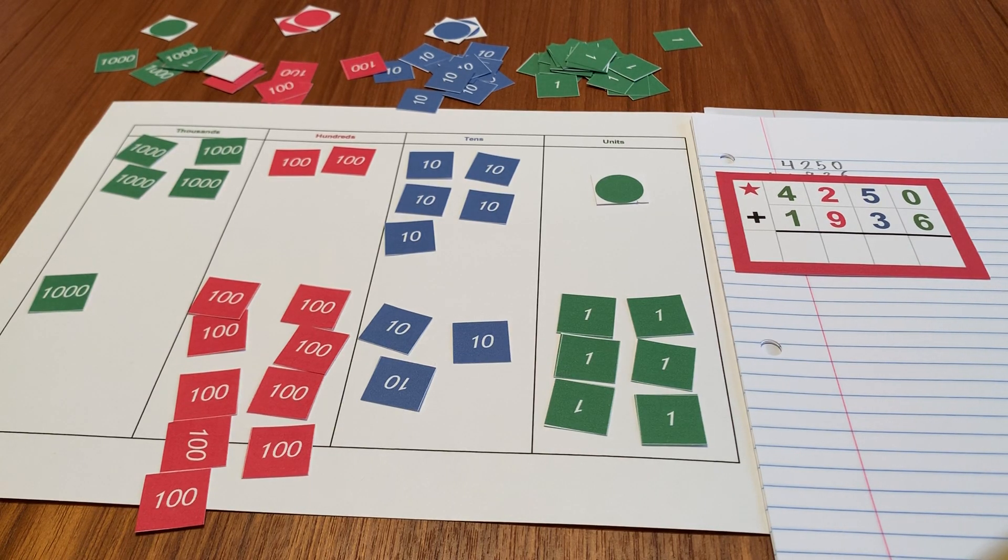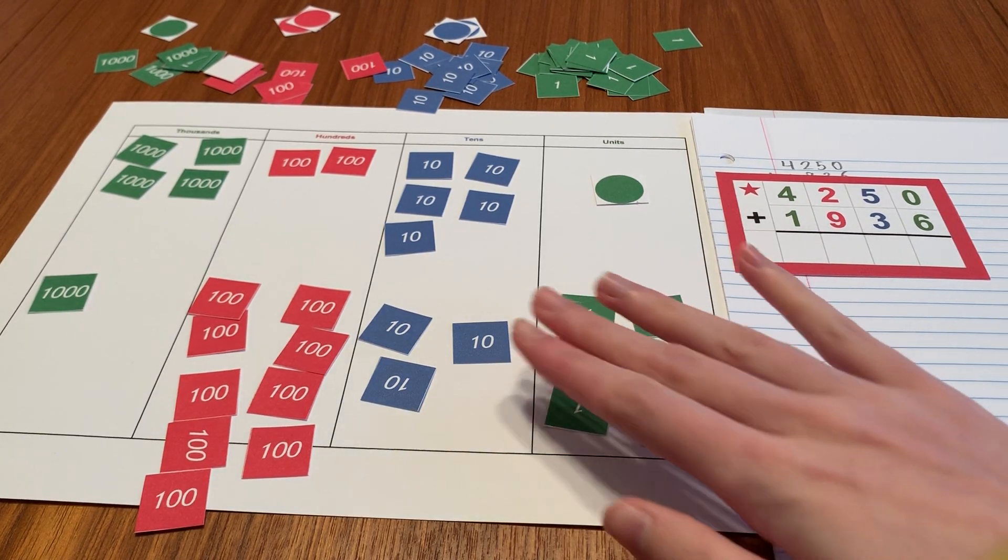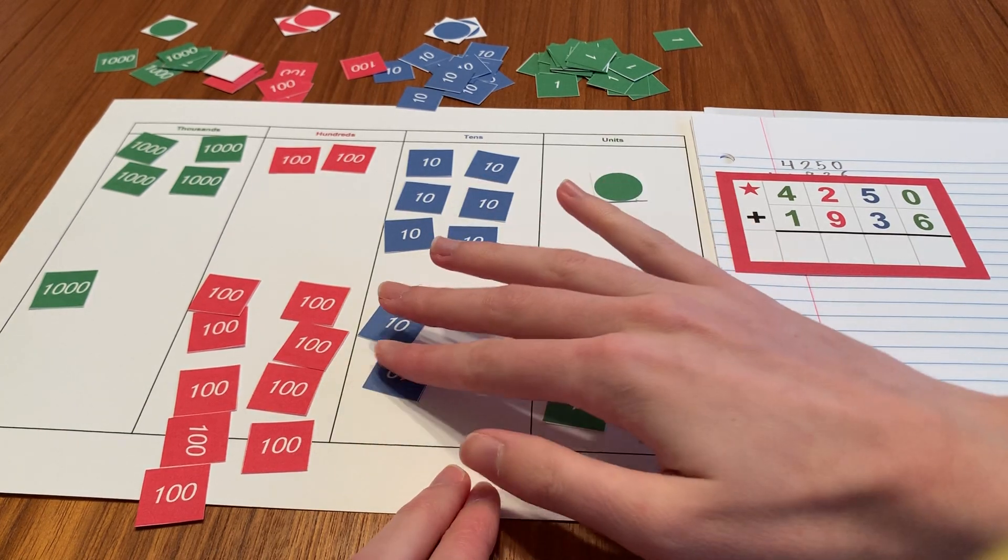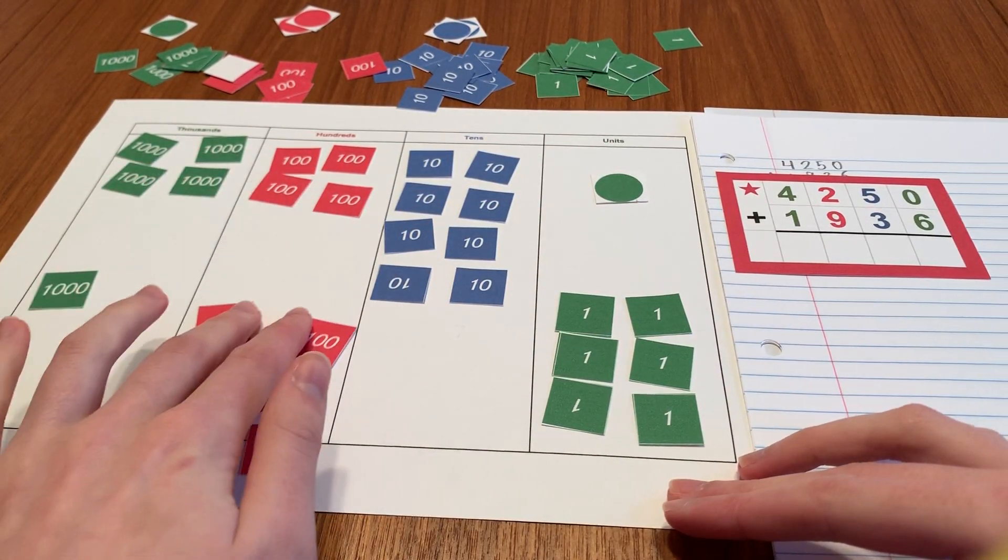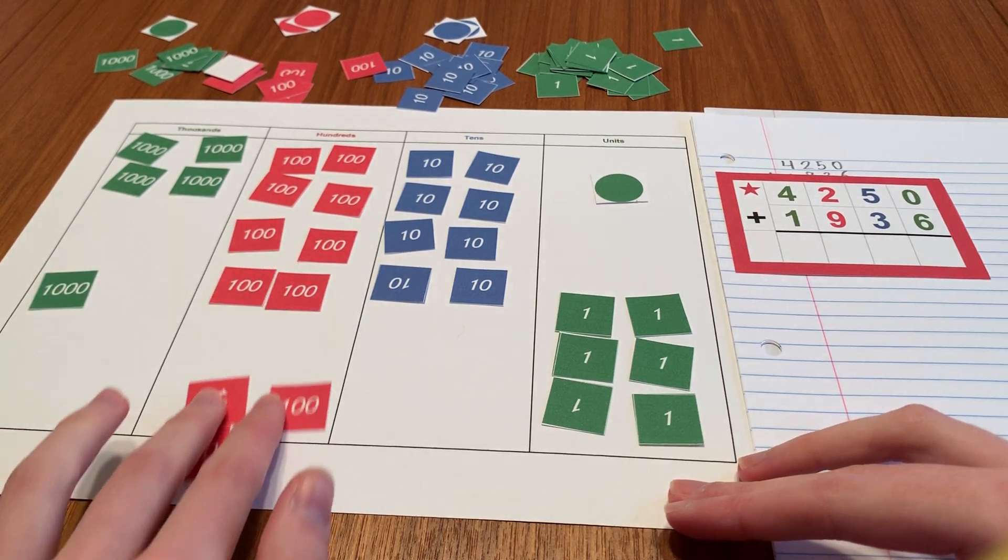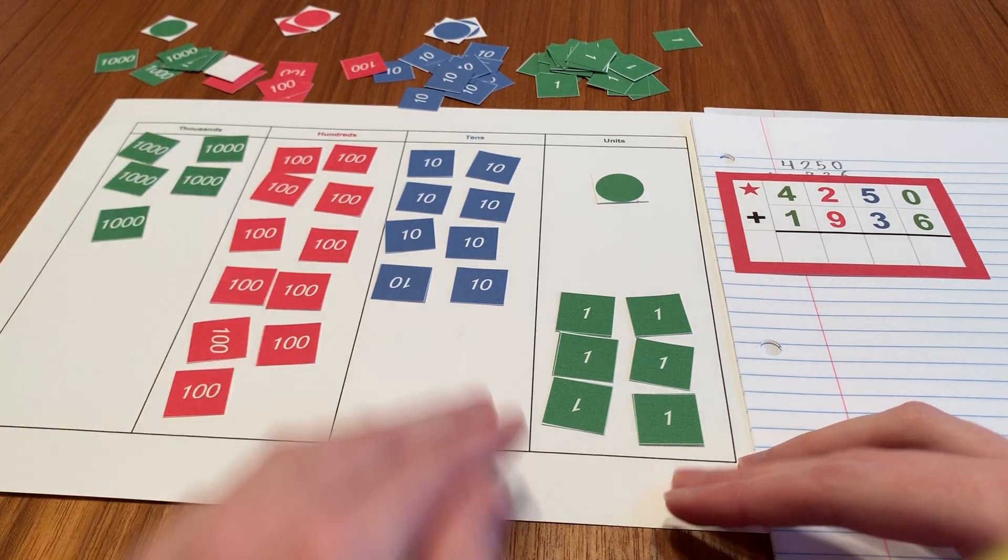So now, I'm going to slide the second numbers up to combine them with the first number. I'm combining my two addends together to get my answer.